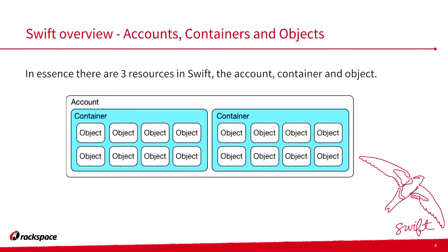So a Swift overview — this is very basic. This is not how Swift works, but it's how my brain conceptualizes things. In Swift you've got three main resources: an account, a container, and objects. Everyone knows object storage tends to be about objects — the data we're storing. We store metadata with the objects, but really it's the data we're storing.